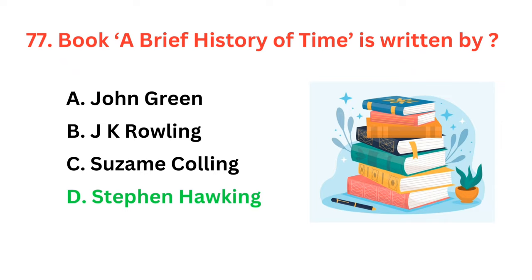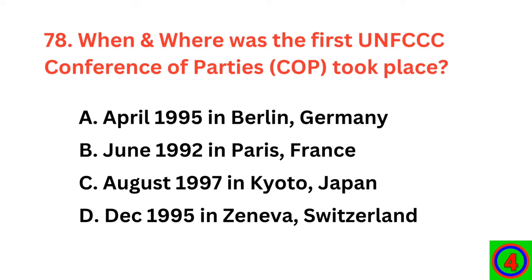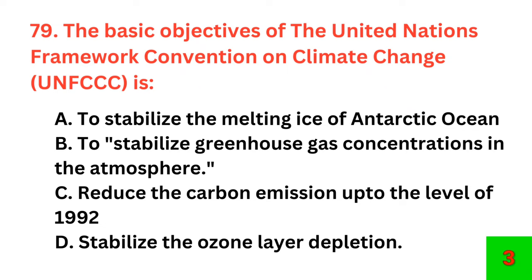When and where was the first UNFCCC Conference of Parties (COP) held? The correct answer is option A: April 1995 in Berlin, Germany. The basic objective of the United Nations Framework Convention on Climate Change is? The correct answer is option B: stabilize greenhouse gas concentrations in the atmosphere.